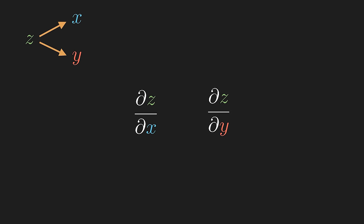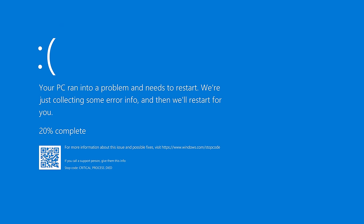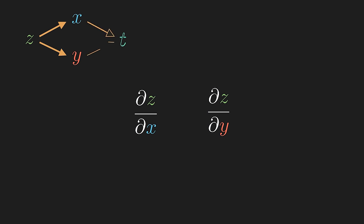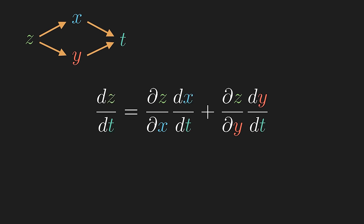But there is an inherent flaw with this notation, so let's push it to the point of failure. If x and y each are dependent on t, then we can find the rate at which z changes with respect to t, which is computed by chain rule.